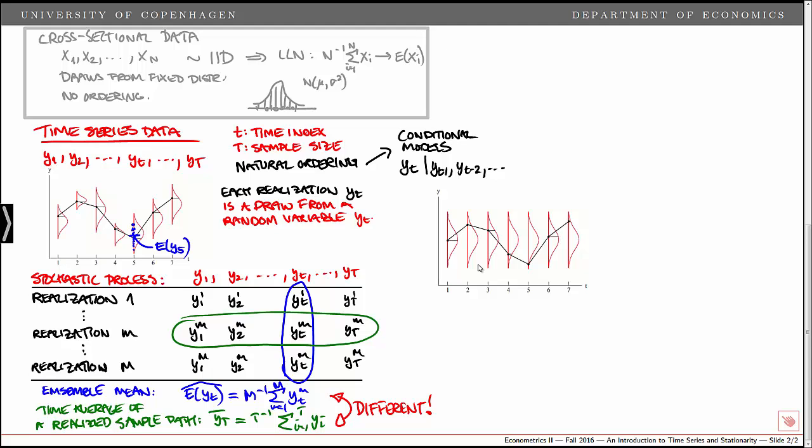Well, that is the case when the data is what we call stationary. So now we have a stationary process. You can see that each of the draws that we have here are draws from the same unconditional distribution.